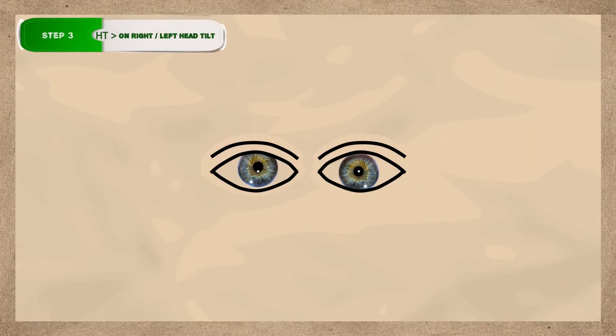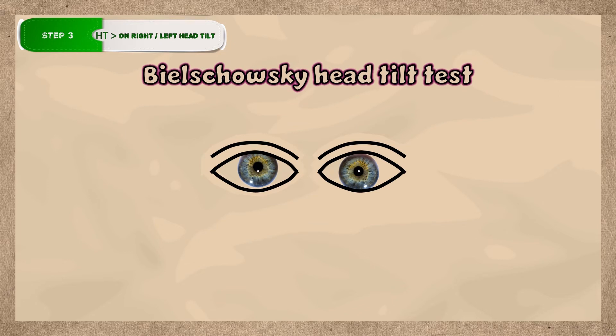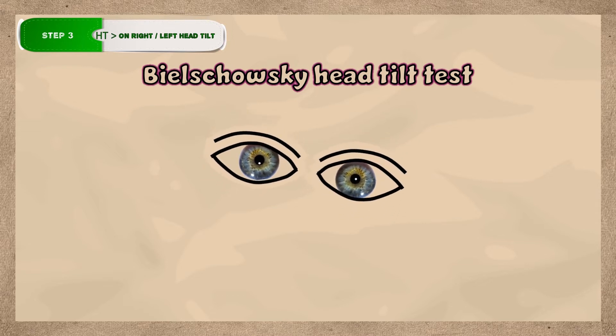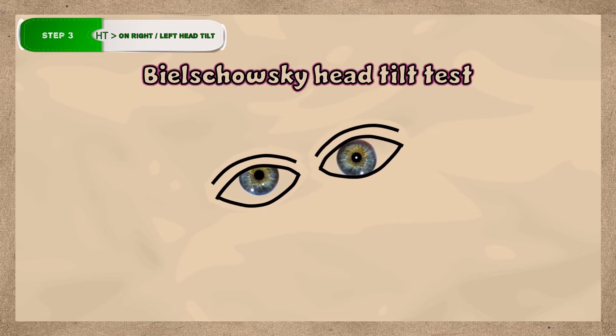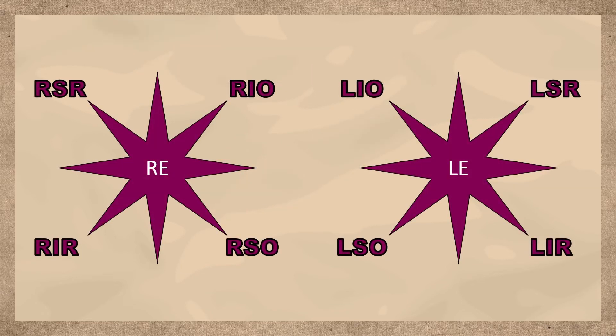In Step 3, also known as the Bielschowski head tilt test, the vertical deviation is assessed on head tilt about 30 degrees to either shoulder with the patient fixating at mid-distance target on eye level. So here the vertical deviation is less on left head tilt and greater on right head tilt. So let's analyze this here.